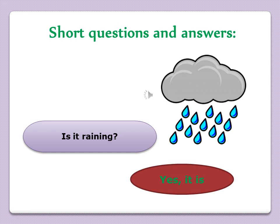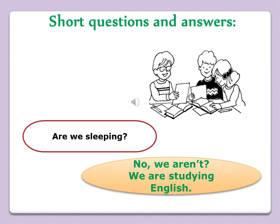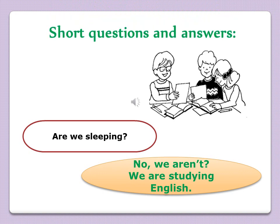Another example: look at the picture — is it raining? Yes, it is. If the answer is positive we say 'yes, it is'; if the answer is negative we say 'no, it isn't'. Are we sleeping? No, we aren't. We are studying English.